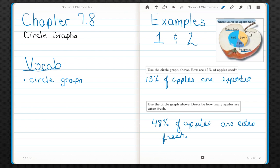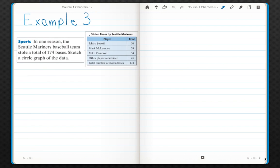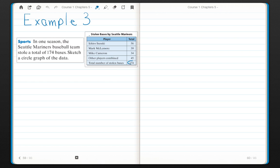Let's take a look at Example 3: Sketching a circle graph. In one season, the Seattle Mariners baseball team stole a total of 174 bases. Sketch a circle graph of the data. Here we have three players—Suzuki, McLemore, and Cameron—and other players combined. Our total is 174.